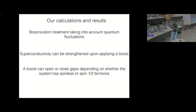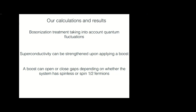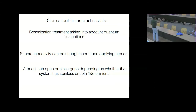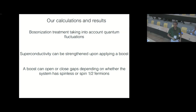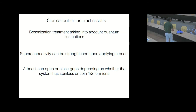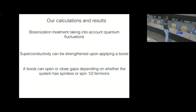The intuitive expectation would be that as you boost the system, the superconductivity gets gradually weaker and eventually completely disappears. What I'm going to try to convince you is that in 1D, in the sort of scenario we're looking at, depending on the kind of dispersion that the electrons have, you can actually have a situation in which the superconductivity is strengthened by a boost — though this can't happen indefinitely and at some point it will go away, so there will be a critical velocity.